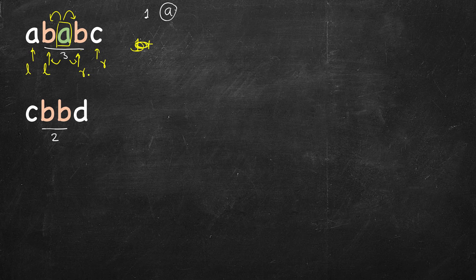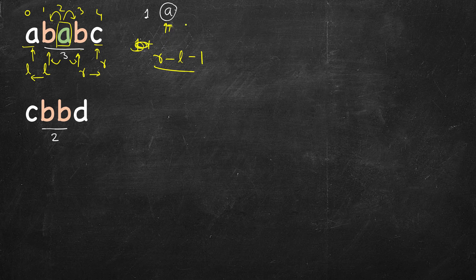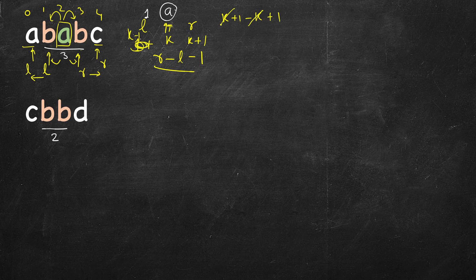We advance r to the right and l to the left together. When l and r are different we stop, and we compute r minus l minus 1. Why minus 1? Because if the indices are 0, 1, 2, 3, 4 then 4 minus 0 is 4 but the length is 3, so it is always 1 less than r minus l. When both l and r are at the same place, r minus l is 0. So the formula is always r minus l minus 1.